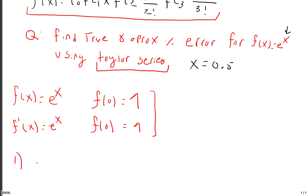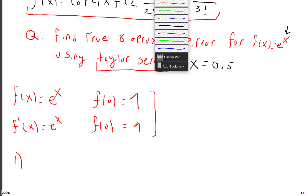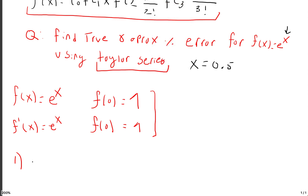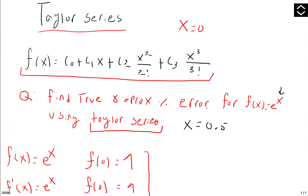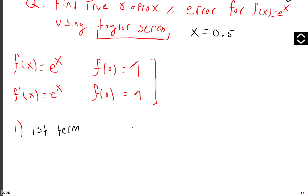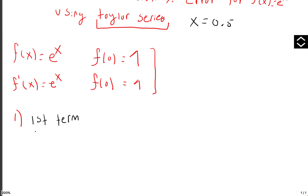Let's start with the first term. If we're approximating the error at each term, for the first term, f of x using the Maclaurin series is just 1.